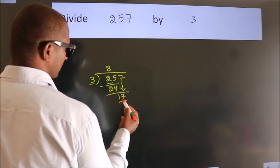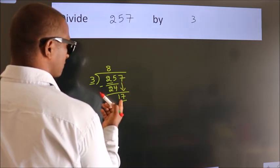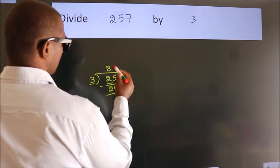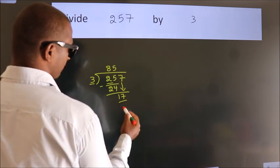So, 17. A number close to 17 in the 3 table is 3 fives, 15.